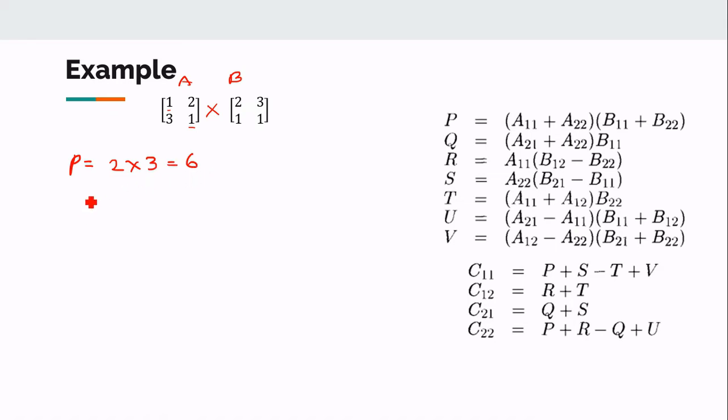And Q is equal to A21, which is 3, plus A22 is 1. This one into B11 is 2. So B11 is 2. So 4 into 2 it will be 8.